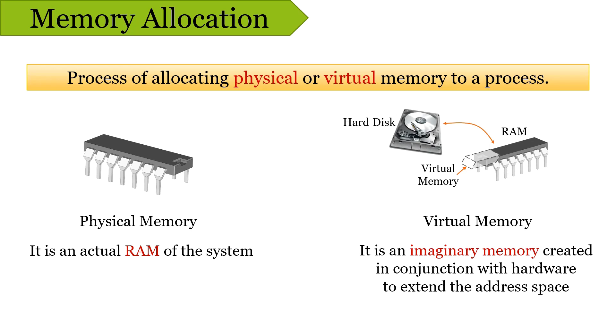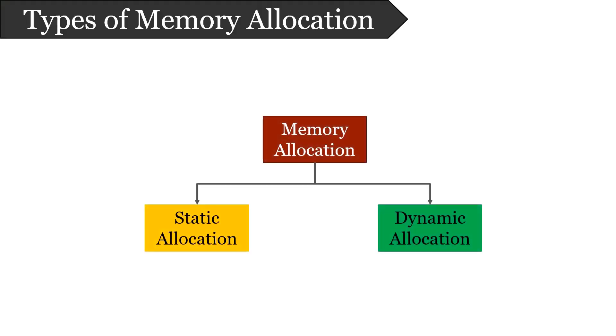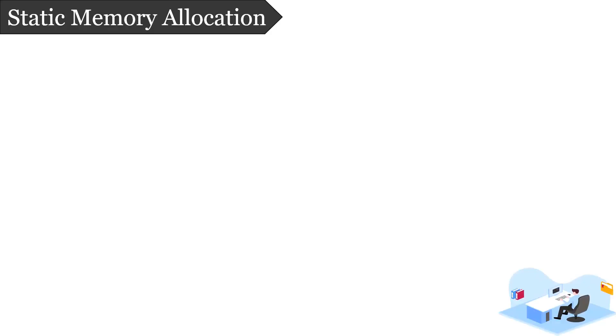If we classify memory allocation on the basis of behavior and method, it can be of two kinds: static memory allocation and dynamic memory allocation. Let's proceed with static memory allocation first.